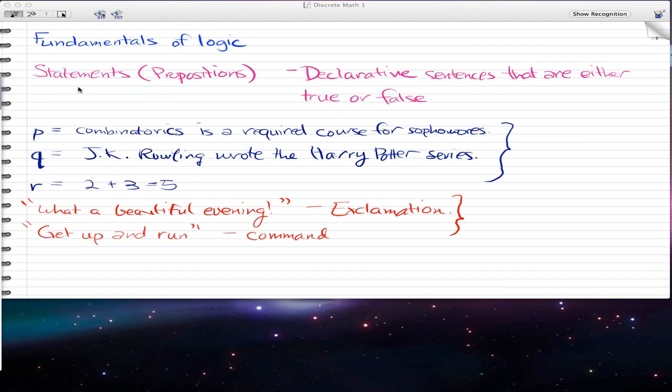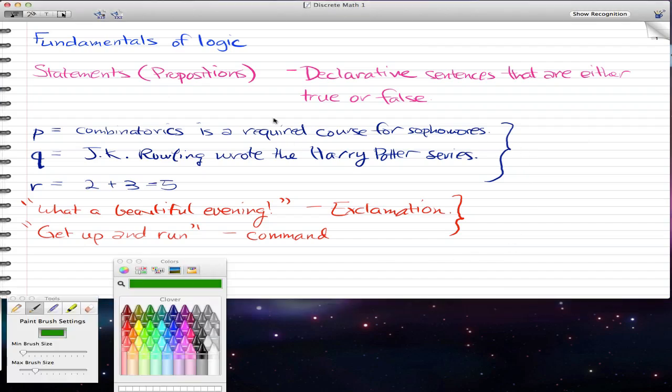First we got to learn what a statement or proposition is. Now propositions or statements are pretty much declarative sentences that are either true or false. So let's look at these statements that we have here in blue. Combinatorics or P is a required course for sophomores, Q, JK Rowling wrote the Harry Potter series, and R, 2 plus 3 equals 5.